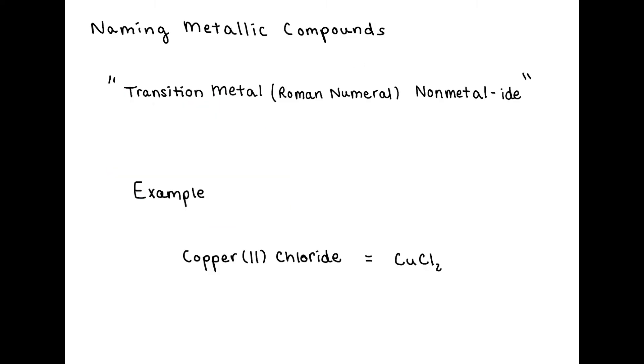When you're naming a compound that has a transition metal, there's a general formula that you follow, which is first the transition metal with any Roman numerals, which I'll explain, and then the non-metal with the -ide ending. In this case, the Roman numerals describe the charge of the transition metal.